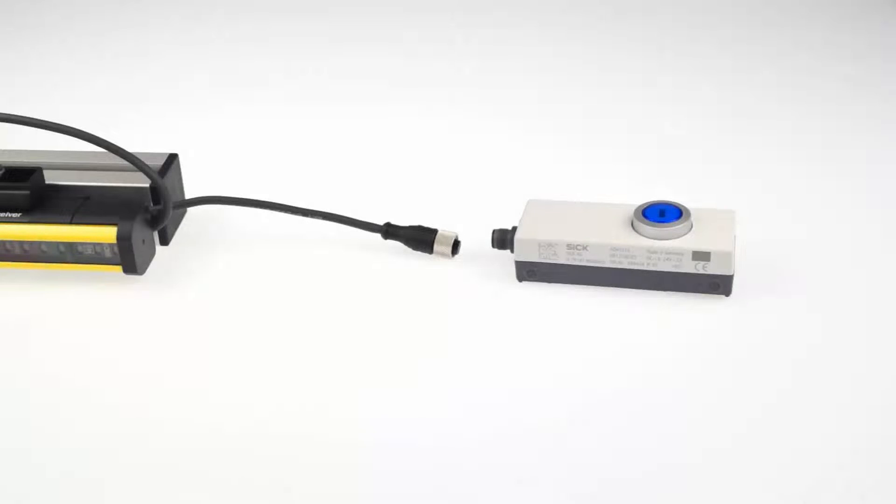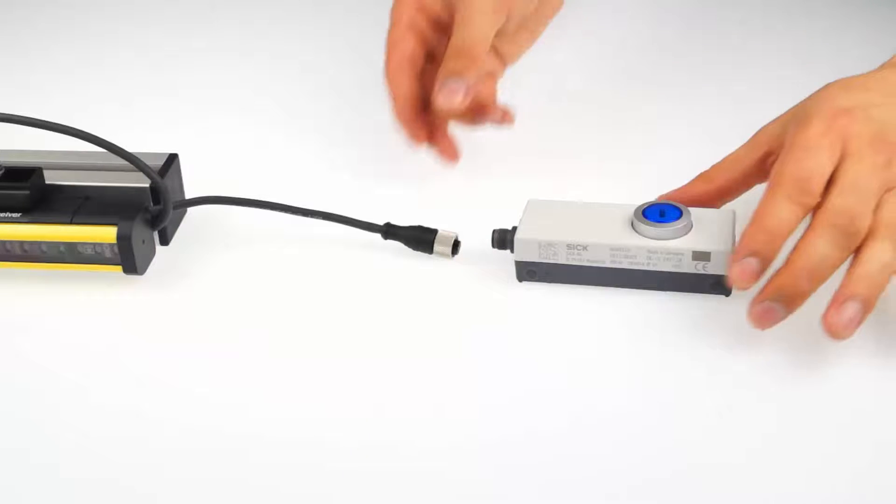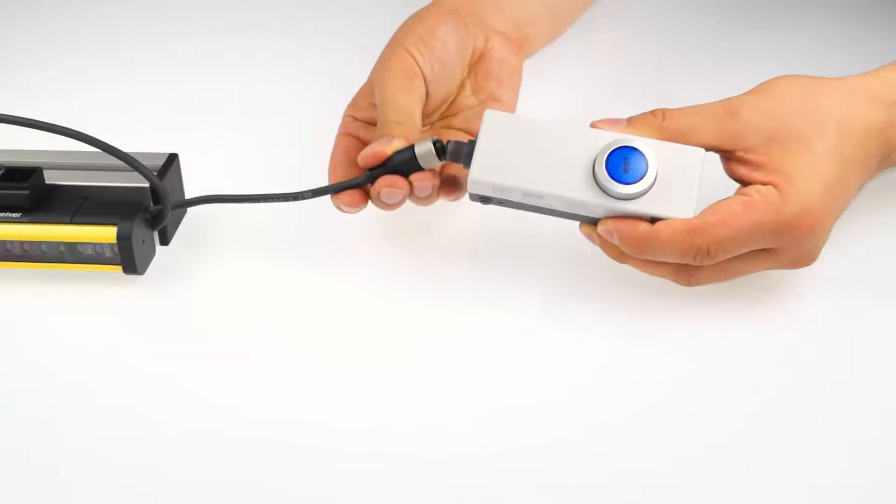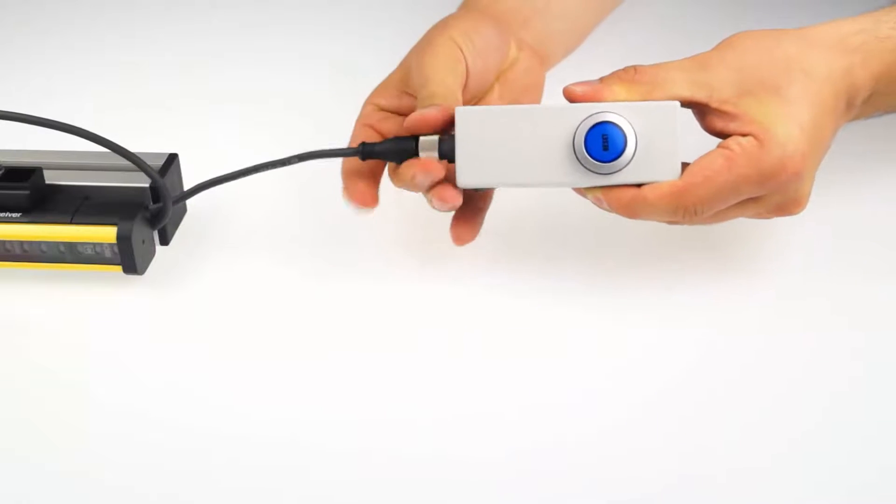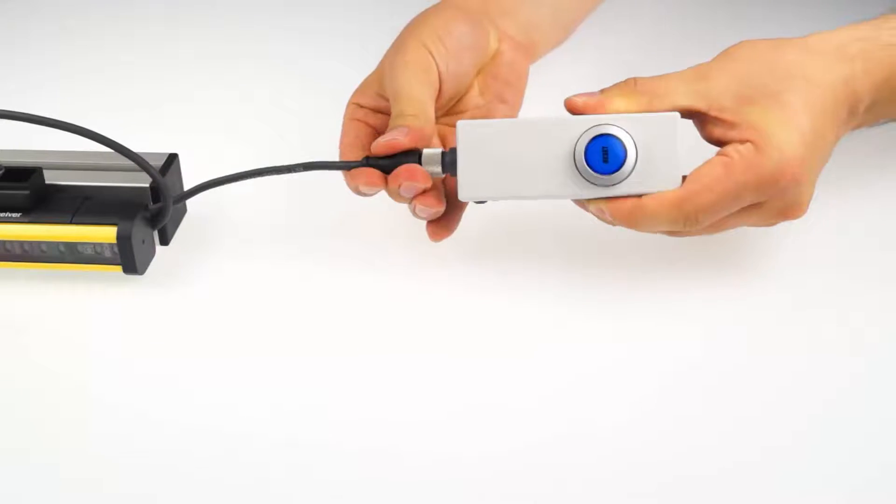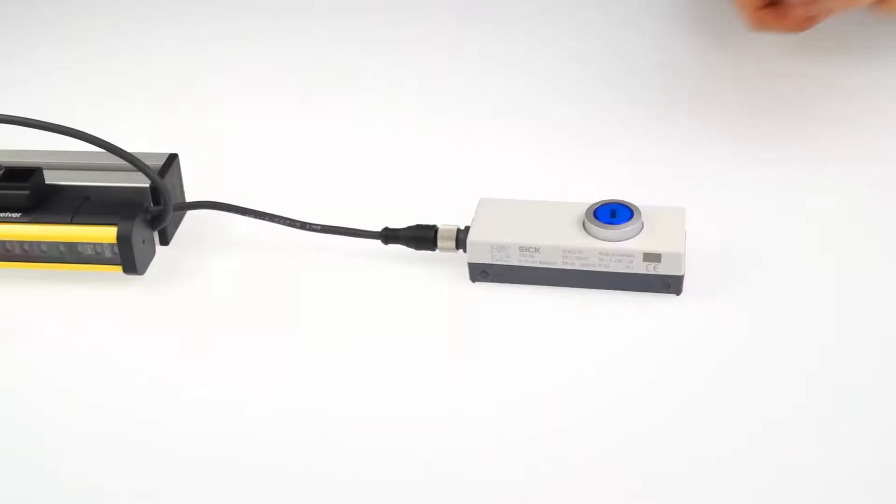If you now want to add a local restart interlock to the system, it is just as easy as the cascading. The reset button is connected to the last receiver in your cascade. Therefore, you also need a system plug with an extension connection here. While being disconnected from the power supply, connect the reset button to the open end of the extension connection on the receiver side at the end of the cascade.